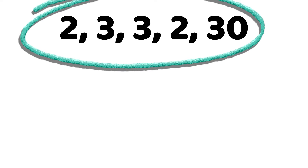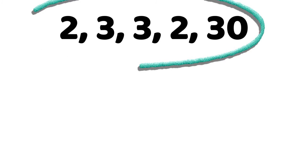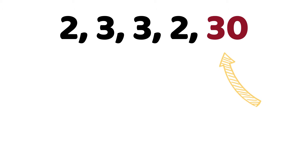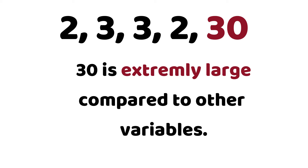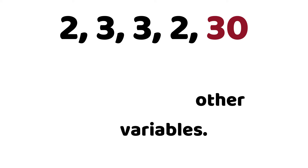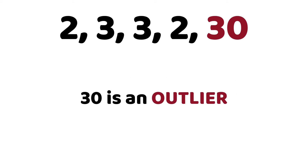Now take a look at this simple sample data set. What did you notice? I'm sure you noticed that something is actually odd right here, and that is 30. Compared to other variables in this data set, 30 is actually extremely large. So in this case, 30 is an outlier.